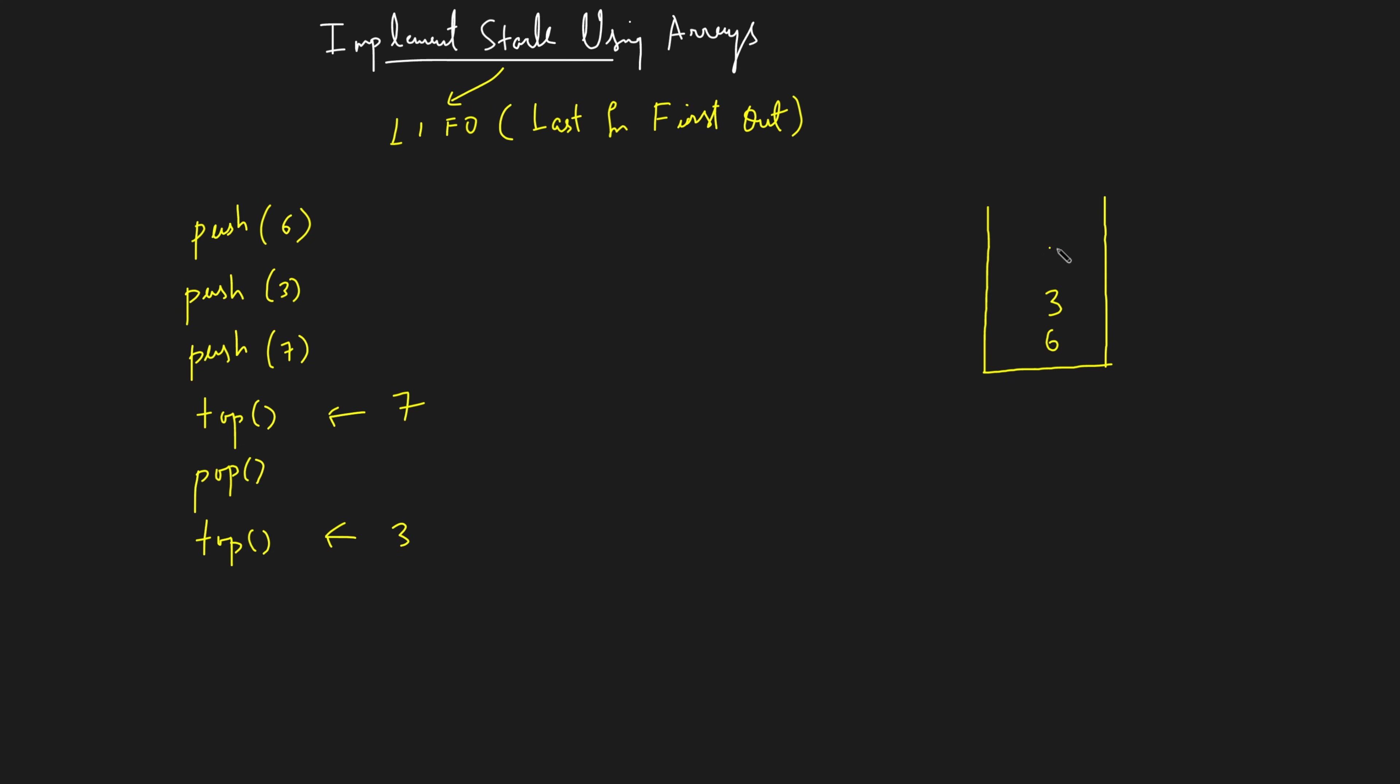So that is why last in first out. Because 7 was entered last, that's why when you did a top you found out 7. After that 3 was entered, that is why when you popped and you did a top you found out 3. So that's the definition of last in first out.